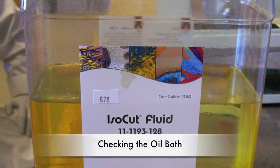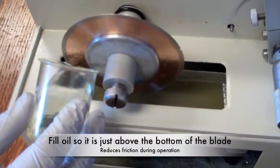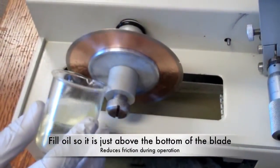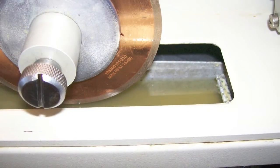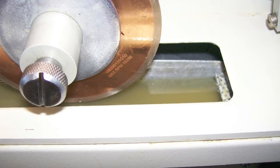Next make sure the oil is at the proper level. From the one gallon container add the oil to a beaker and then add to the oil bath. The oil level can rise just above the bottom of the blade. This will help reduce friction and heat when the instrument is operating.